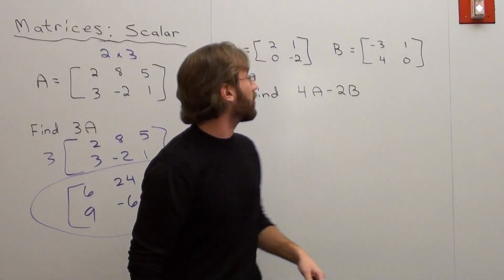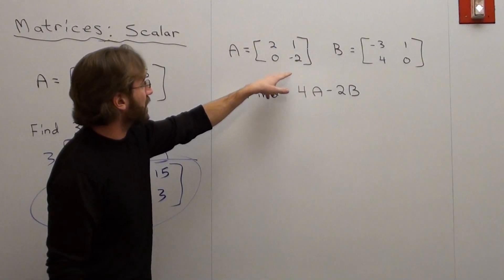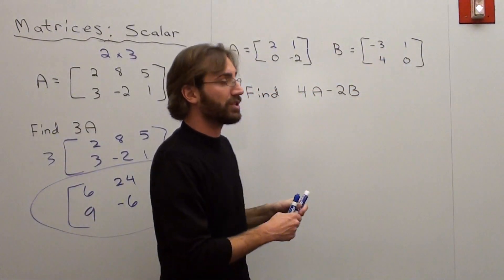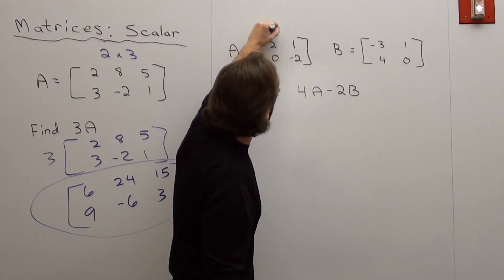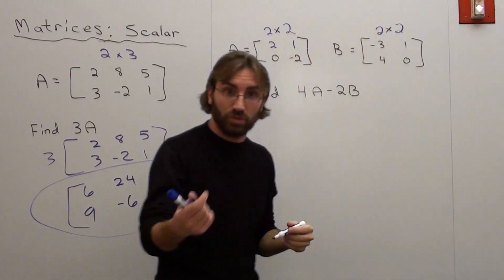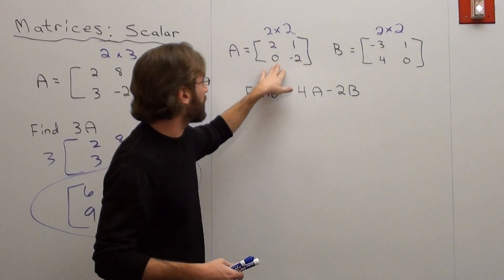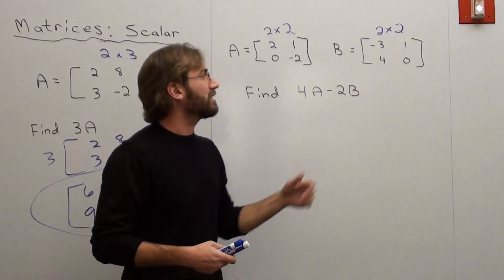Let's do something a little bit more difficult, where I've got these two matrices. They're both 2 by 2s. 2, 1, 0, negative 2. Negative 3, 1, 4, 0. I'll write that up there. I hope you can see it. Hopefully I left myself some room for that. And I want to basically find 4 times this matrix, subtracted by 2 times that matrix.